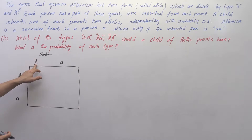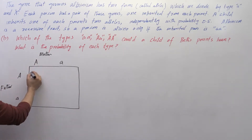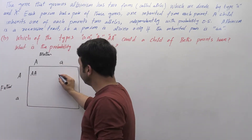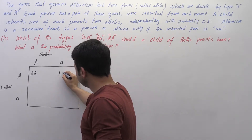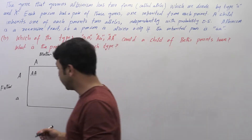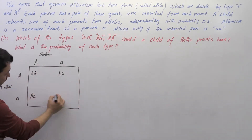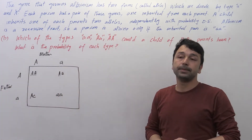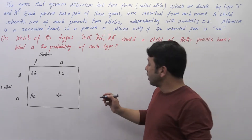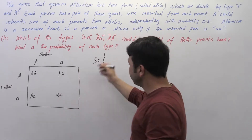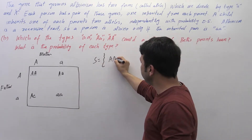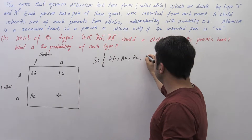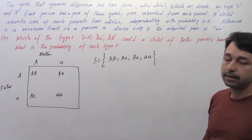So capital 'A' from the mother and capital 'A' from the father gives both capital 'AA'. Similarly, capital 'A' from father and small 'a' from mother gives capital 'A' small 'a'. Small 'a' from mother and capital 'A' from father also gives capital 'A' small 'a'. And small 'a' from both gives both small 'aa'. So in terms of sample space, we have: capital 'AA', capital 'A' small 'a', capital 'A' small 'a', and both small 'aa' — four sample points in total.